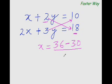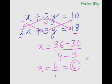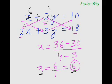Now let's find the denominator. Multiply this number with this number: 2 times 2 is 4, and subtract the product of this number and this number — there is no number there so it is 1, so 1 times 3 is 3. The answer is 36 minus 30 is 6, and 4 minus 3 is 1, so 6 over 1 is 6. Therefore x equal to 6. Now substitute this x into one of the equations: 6 plus something equals 10, so 6 plus 4 equals 10, and 2 times 2 equals 4, so y equal to 2.